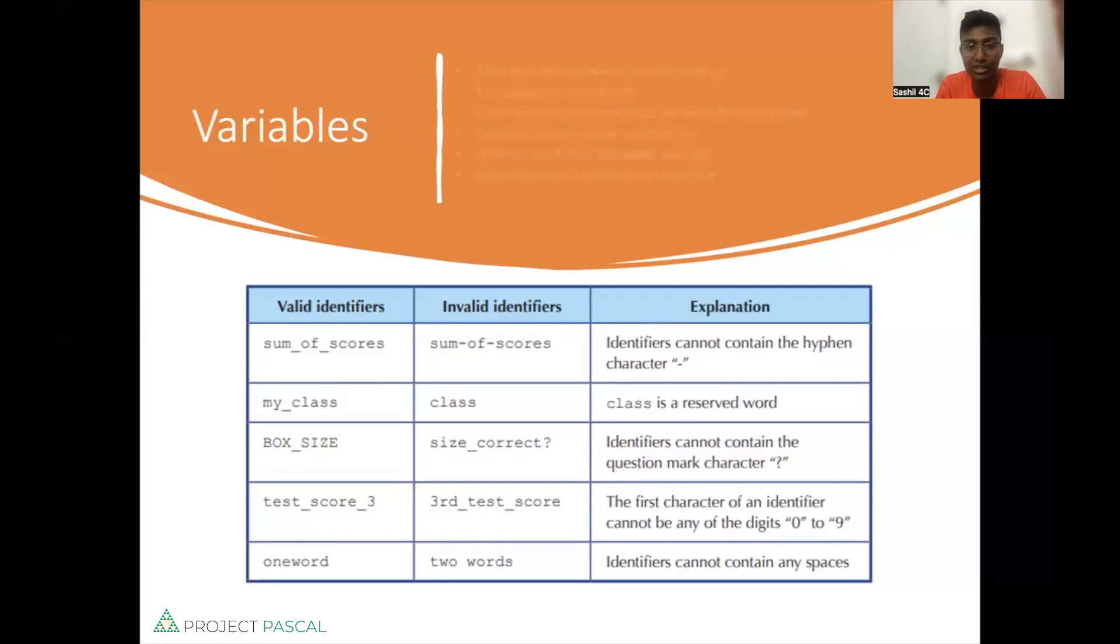So moving on. So let's talk about variables. So variables are firstly how you identify a certain element. So let's say I assign a variable to something. So let's say I have the number 10. So as you can see, my first variable is sum of scores. So I want to give the number 10. So the sum of scores can be 10. So all I have to write is sum of scores equals 10. So I'm assigning the variable sum of scores to 10. So in my upcoming lines of code, I can simply refer to 10 as sum of scores. So here is some simple syntax,